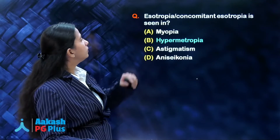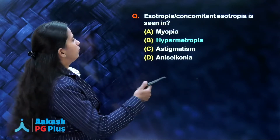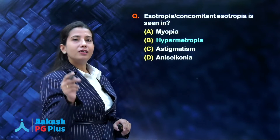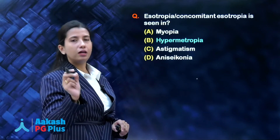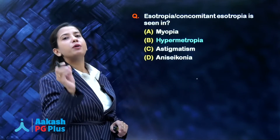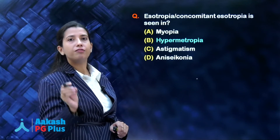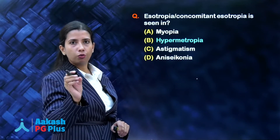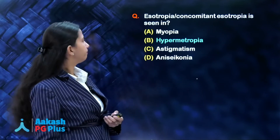Can we answer this question? Yes. We have learned that hypermetropia is a very important cause of refractive accommodative esotropia. So the answer is hypermetropia.